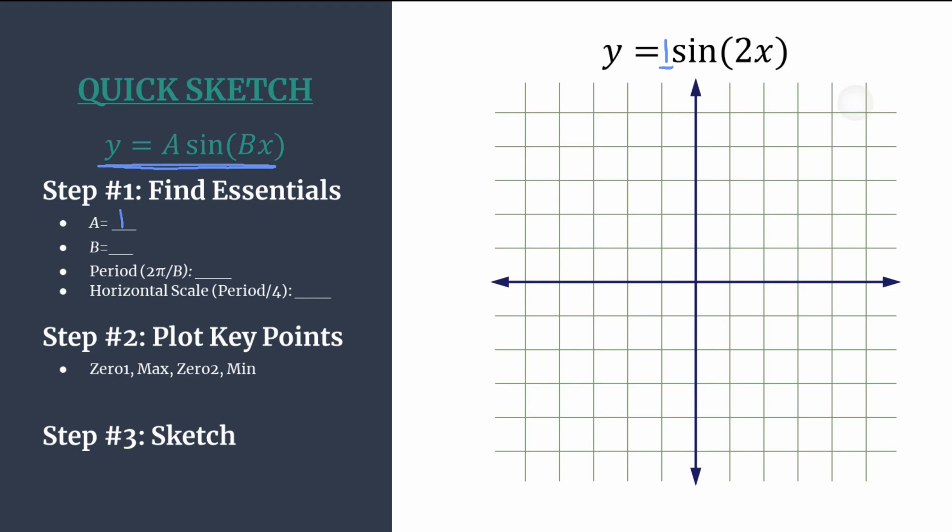Moving on to B, that's in front of the x, that's 2. And we use B to find our period or the length of one horizontal cycle. So 2 pi over B, in this case 2 pi over 2. Pi is the horizontal length of one cycle.